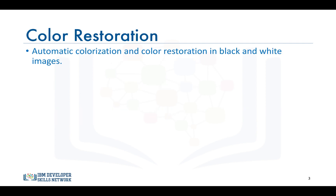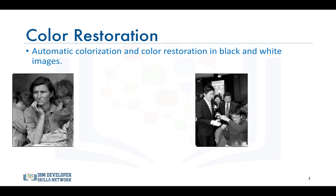The first amazing application is color restoration, where a given image in grayscale is automatically turned into a colored one. A group of researchers in Japan built a system using convolutional neural networks that can take a grayscale image and add life to them by turning them into colored ones.